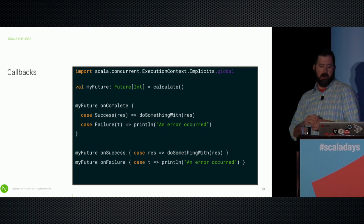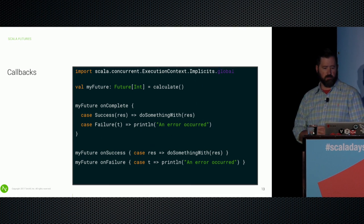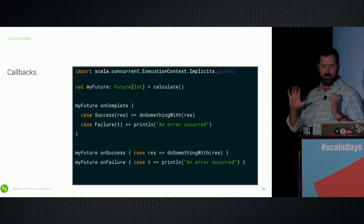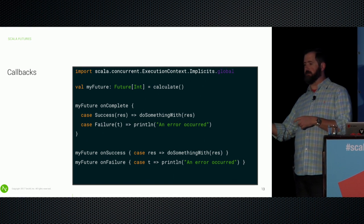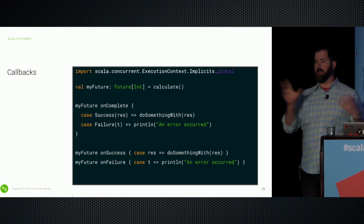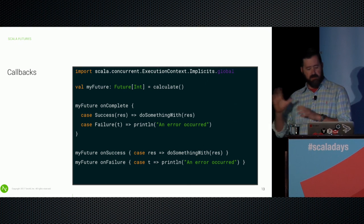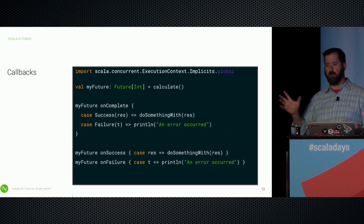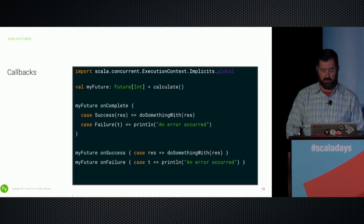Callbacks look something like this: we set up our future with a calculate call, then have an on-complete which takes a partial function. We can match on the success case for the happy path, match on the failure case for failure handling. We also have individual on-success and on-failure — those are technically deprecated in 2.12 but still available.